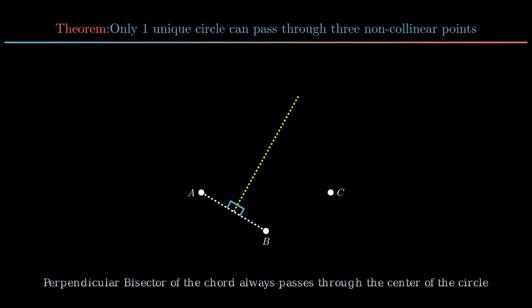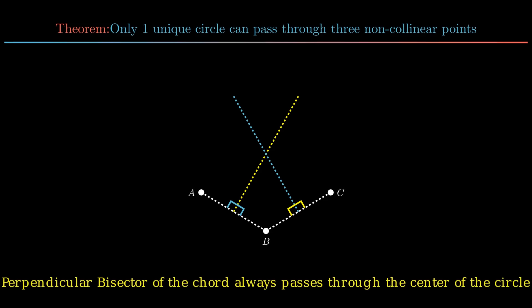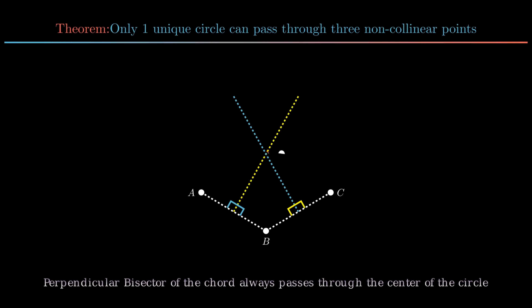to find the center of the circle on the perpendicular bisector line of AB, join point B to C and construct the perpendicular bisector of BC. The point where these two bisectors meet will be the center of the circle, denoted by point O. Hence the theorem is proved.